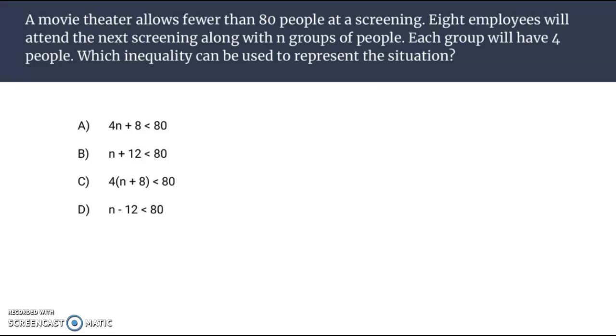Let's look at another one here. Movie theater allows fewer than 80 people at a screening. Let's pause right there and start setting up our inequality. Fewer than 80, it's less than 80. Eight employees will attend the next screening, so we account for 8. Along in groups of people with each group having 4 people. 4N.